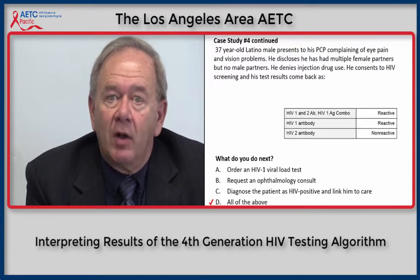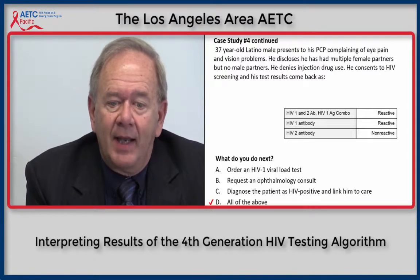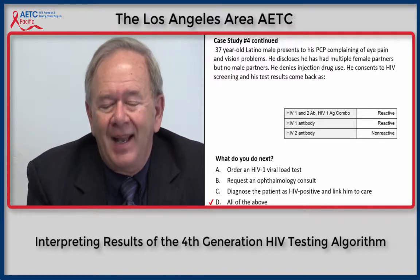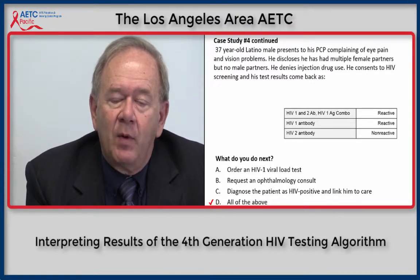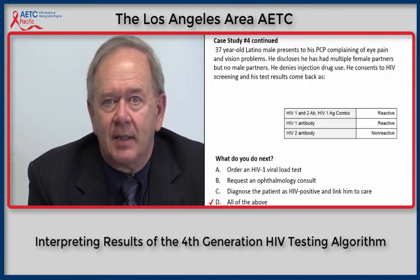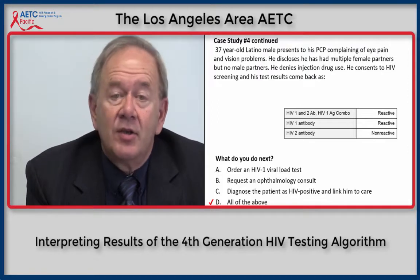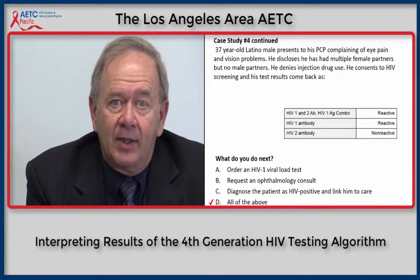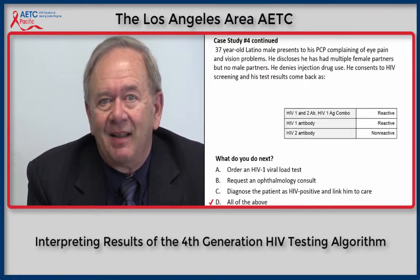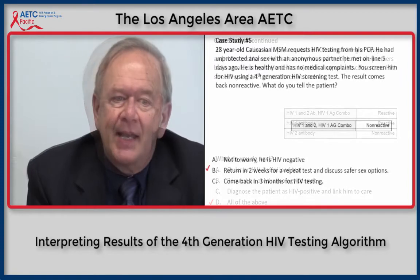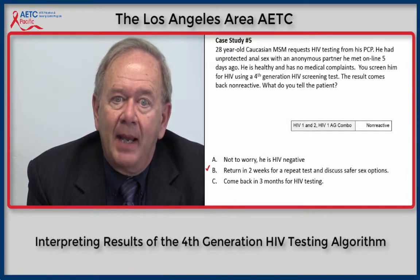In this circumstance, what would you do next for this HIV-infected patient with eye pain and vision problems? The preferred answer is D — all of the above. You would diagnose the patient as HIV positive and link him to HIV care, order an HIV-1 viral load test and CD4 count as part of the initial evaluation, and request an ophthalmology consult because in an HIV-infected patient with visual symptoms, it might indicate the presence of an opportunistic infection.